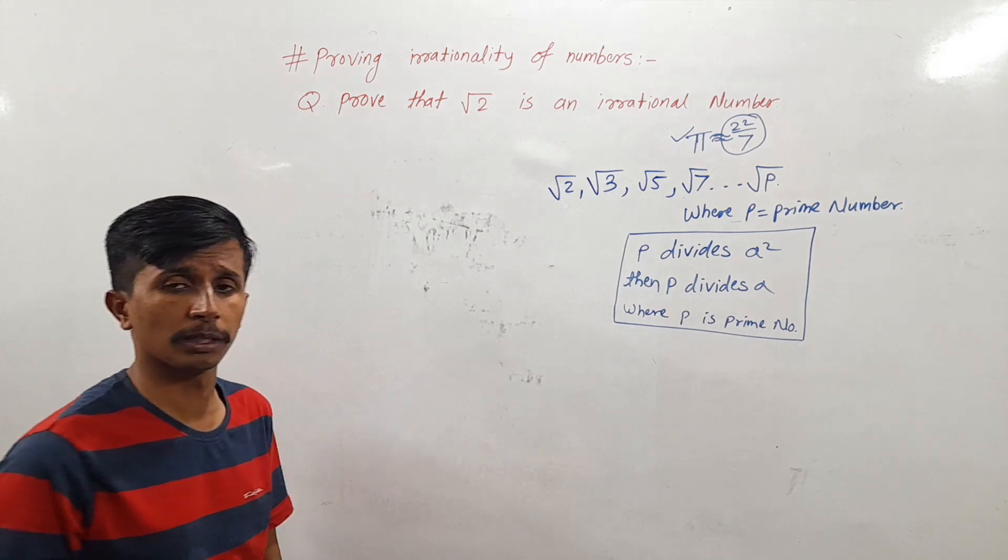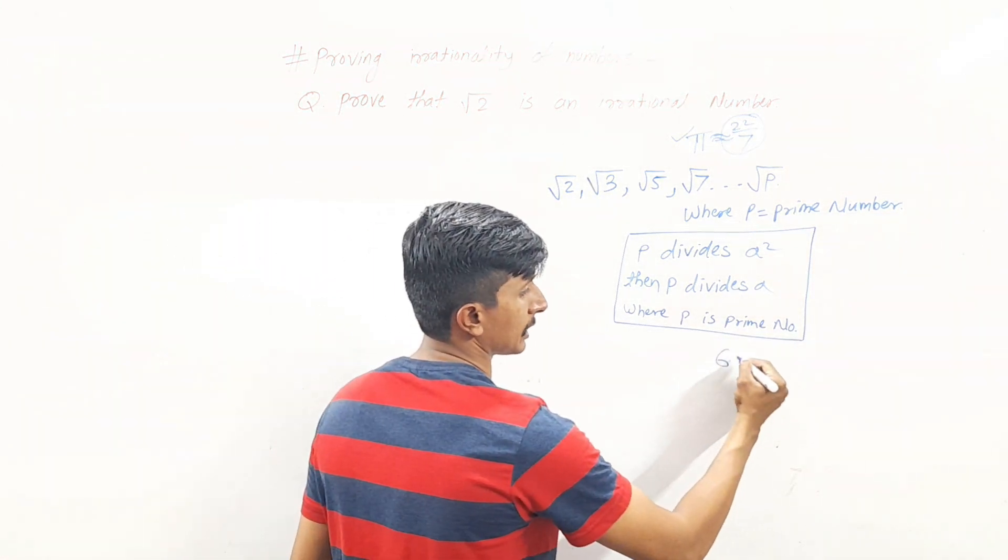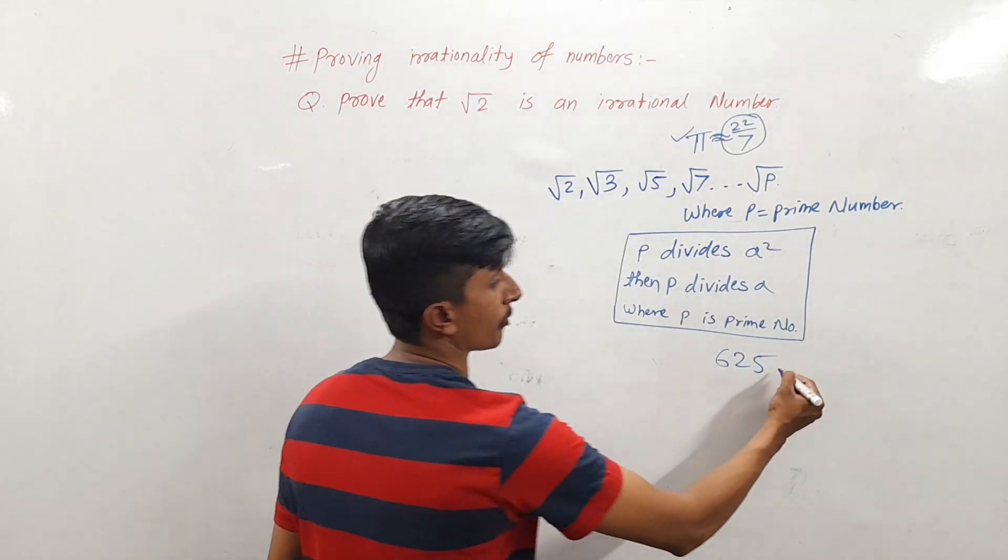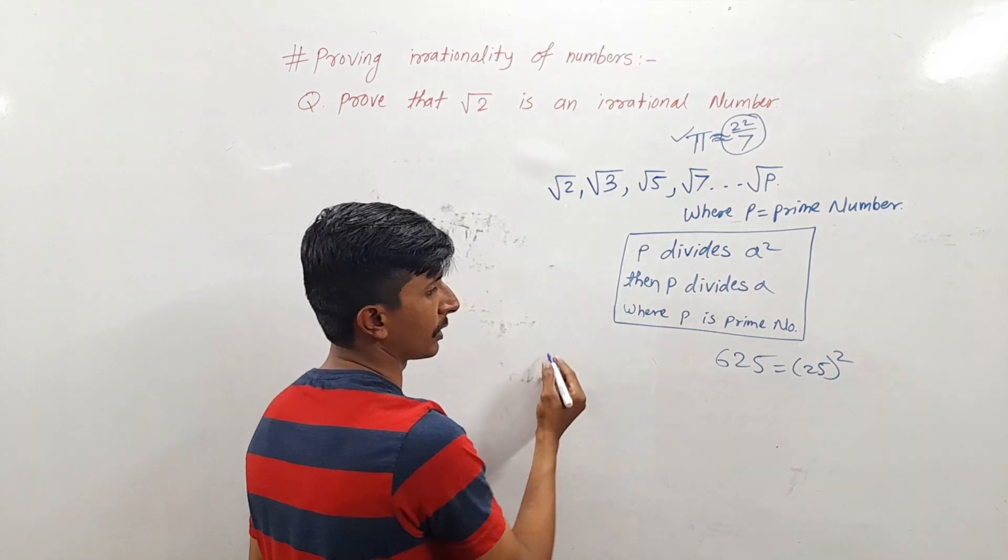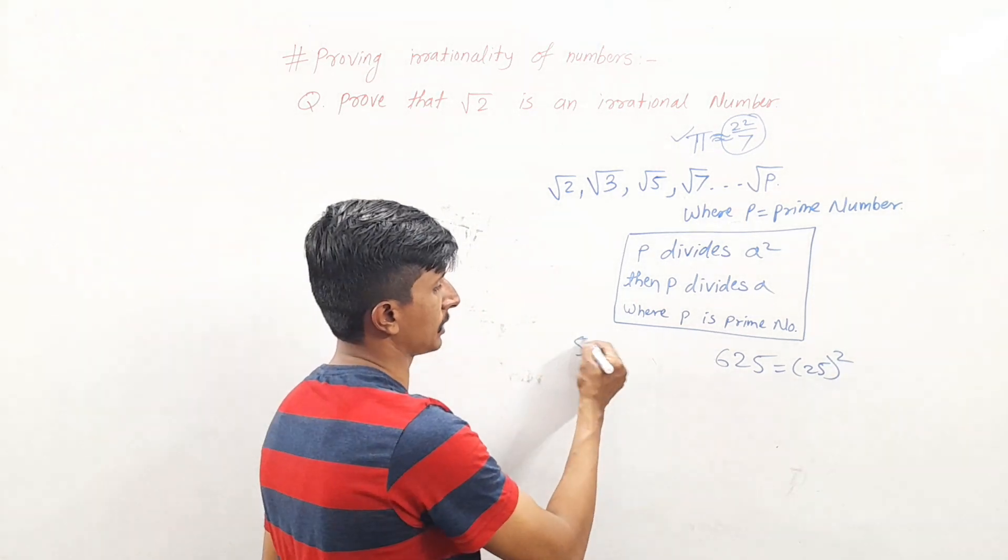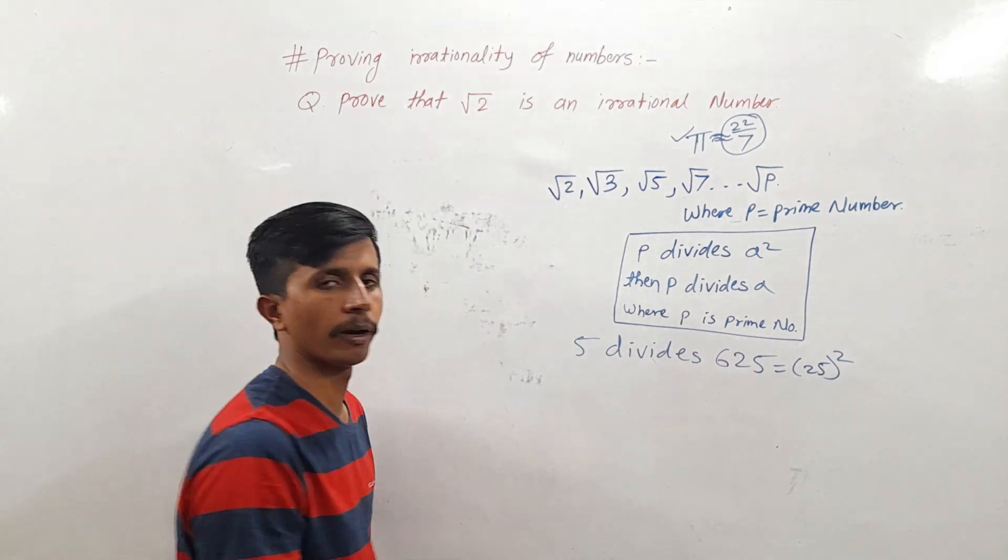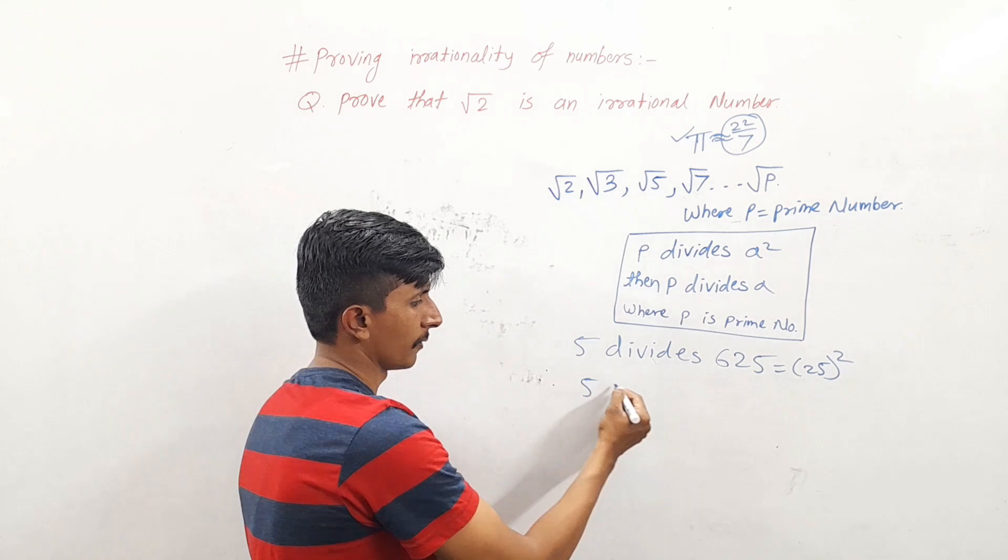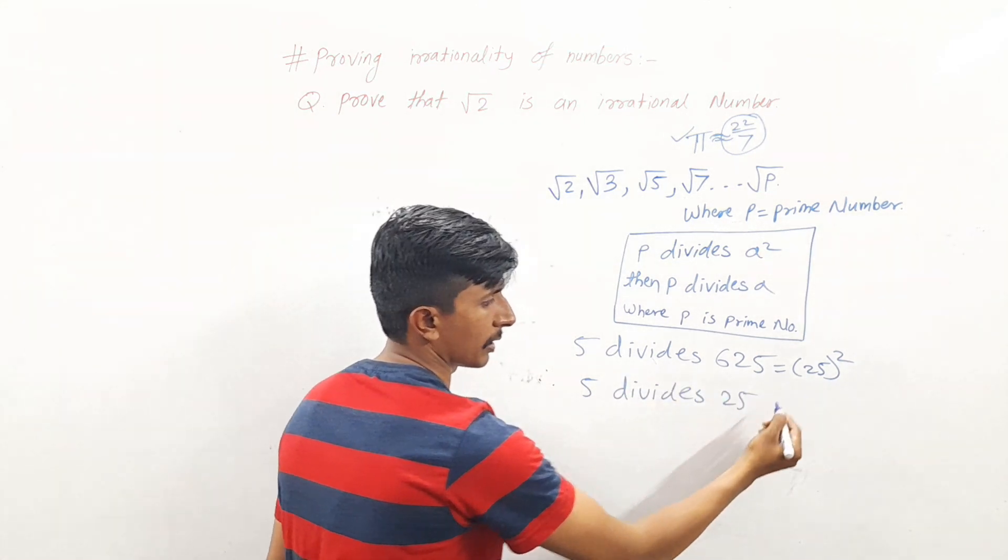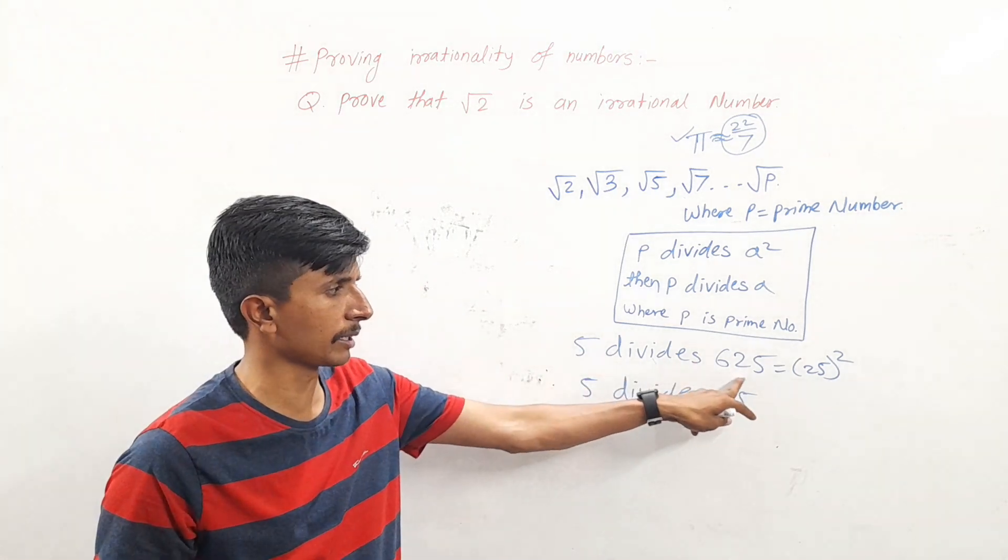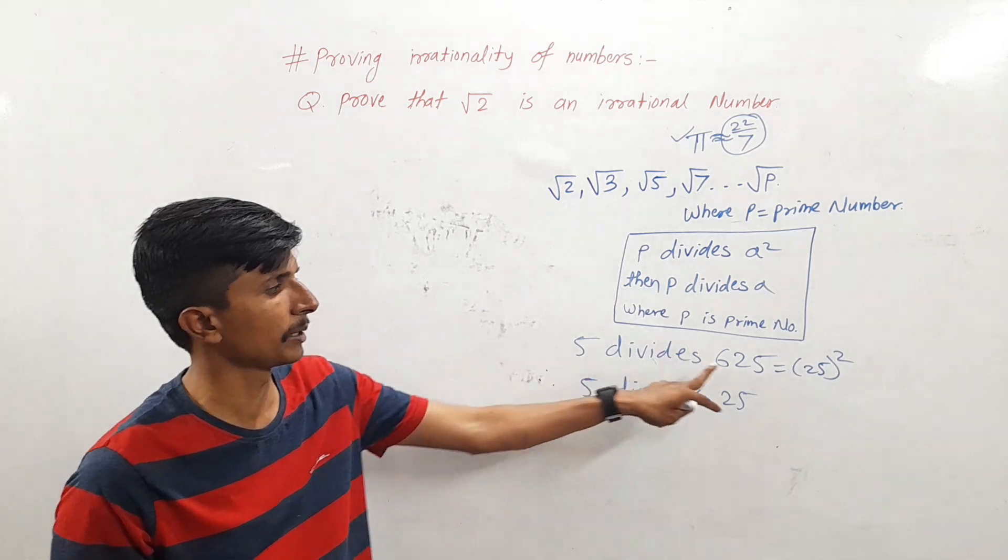Let us take a general example. Suppose 625. Here 625 can be written in the form of 25 square. 625 ko divide karenge to number konsa hai? 5. So here we can say 5 divides 625, therefore we can say that 5 divides 25 also.